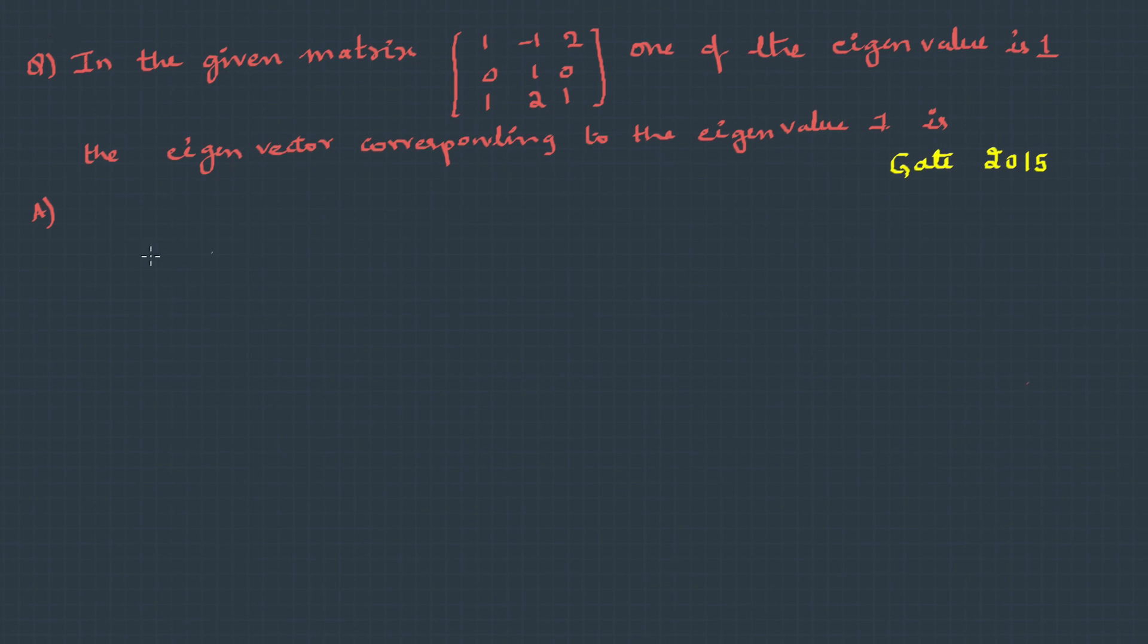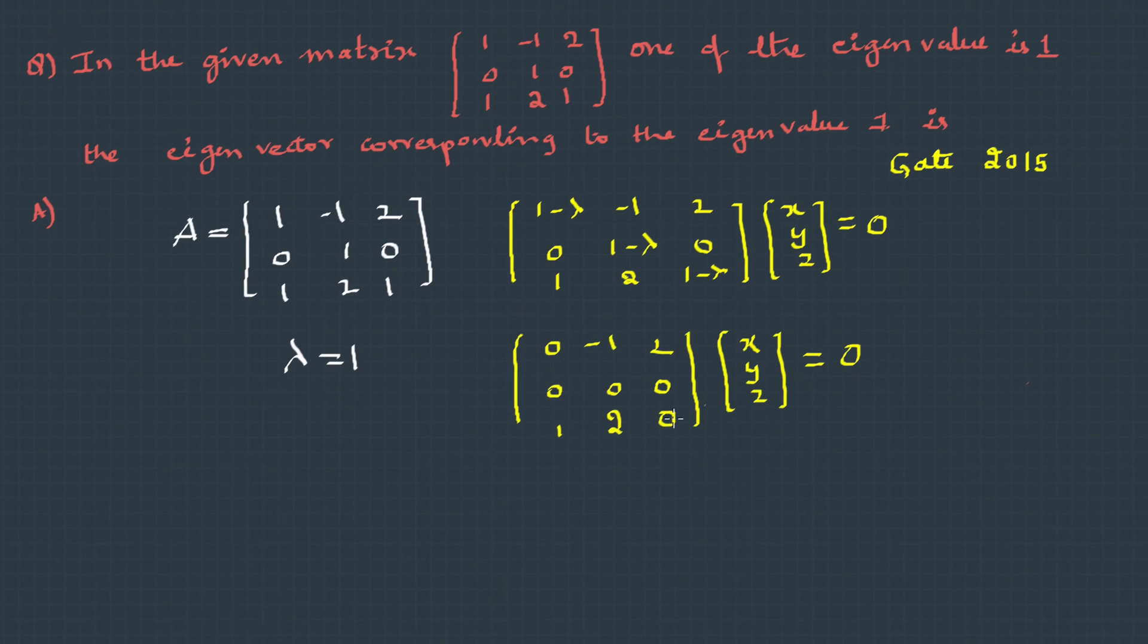So the matrix A is given, and it's given that the eigenvalue is 1. So lambda is 1, and when we substitute this it becomes shown. Now once you open this, it is -y + 2z = 0 and x + 2y = 0. From these two equations, if I solve for y, I could write z as y/2 and x is -2y.